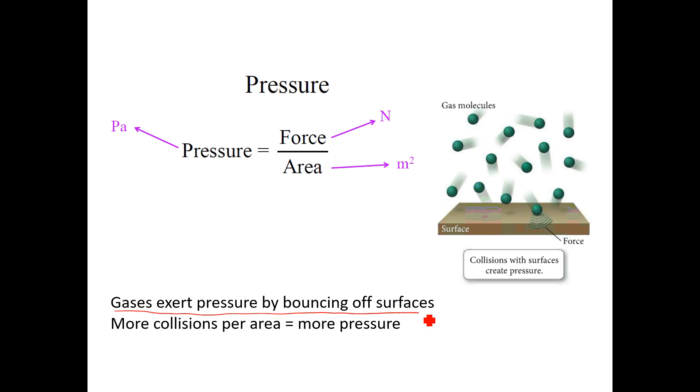Gases exert pressure by bouncing off surfaces. That's what's going on at a particle level—there's pressure because there's particles bouncing around. Something to consider as we consider the relationship between temperature, pressure, and volume is that the more collisions you have per area, the more pressure you will have. If doing something causes the pressure to increase, it must be because there's more collisions happening, or perhaps the collisions are happening with more force.